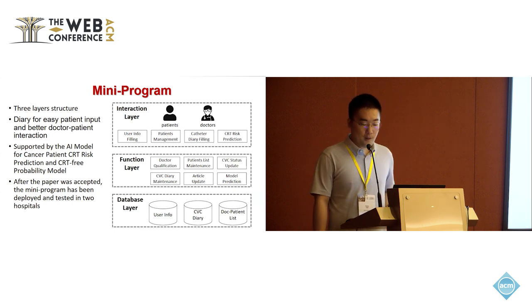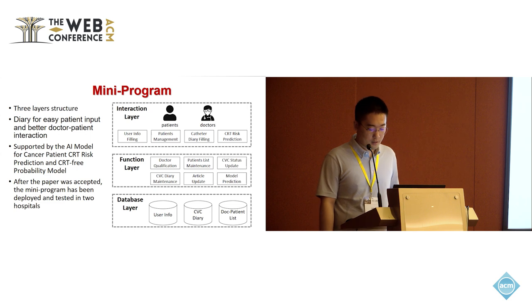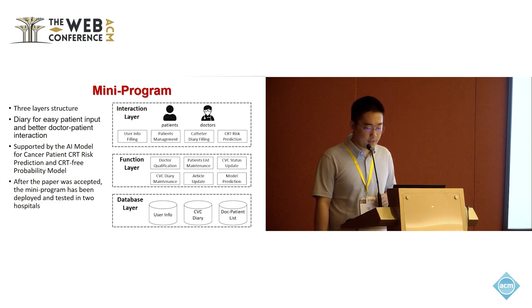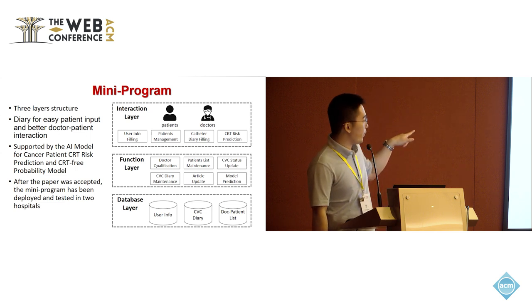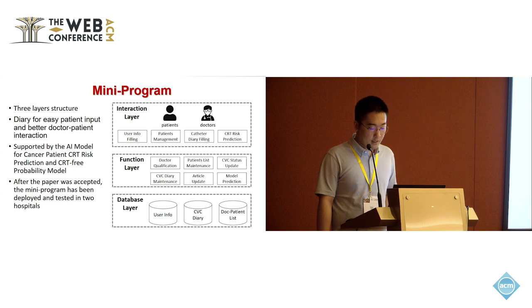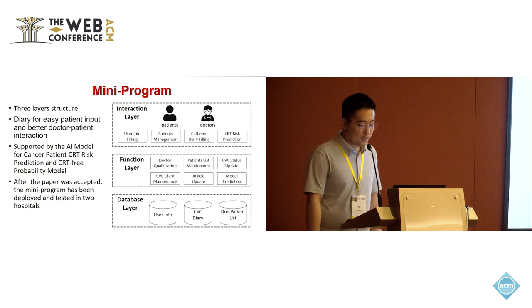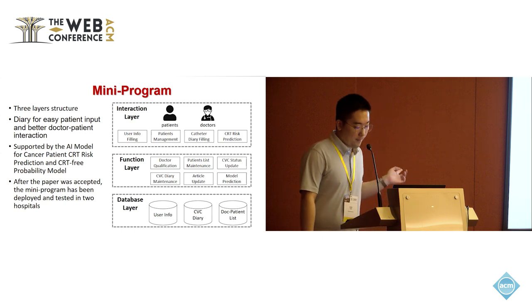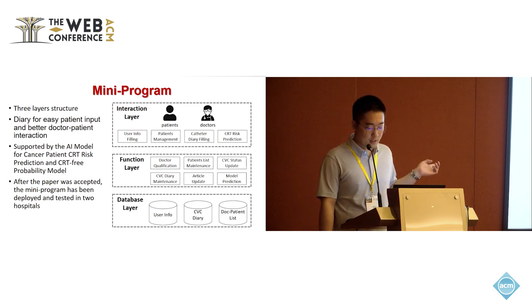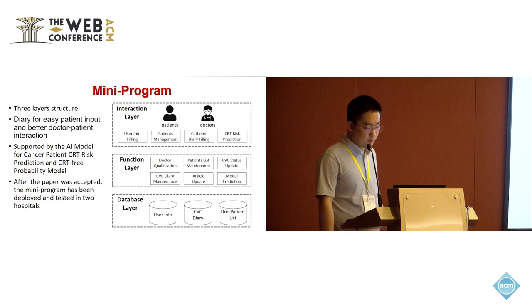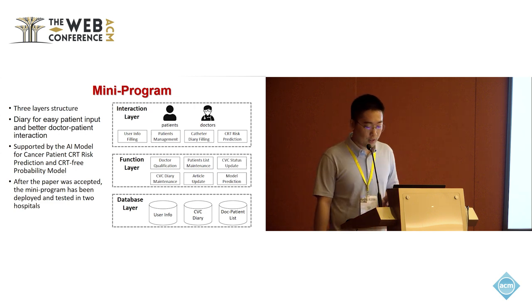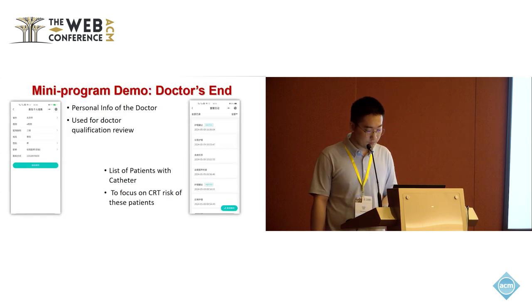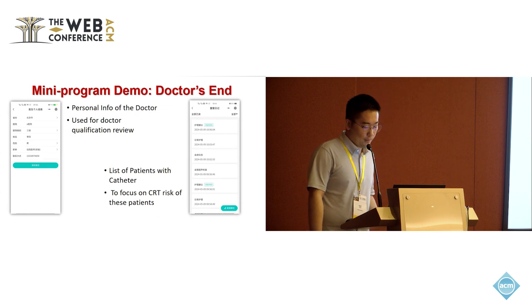To make full use of the models, we designed and developed a mini program for both patients and doctors. The mini program has a three-layer structure and includes an event streaming feature we named a diary, for patients to record their catheter situation. This diary function helps doctors monitor CRT risk and provides valuable insights into patients' day-to-day health status. The prediction is supported by the AI model for cancer patients' CRT risk prediction and the CRT-free probability model, enabling doctors to give precise clinical advice.